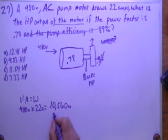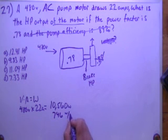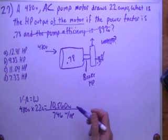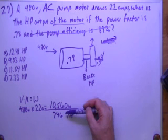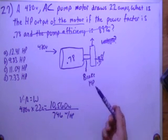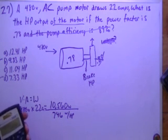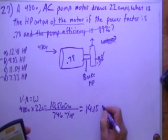We also know that there are 746 watts per horsepower from the formulas in the front of the book. And so if I divide 10,560 by 746, I should get something like 12-ish. It's probably not going to be 7, it's not going to be B or D. So I'll take 10,560 divided by 746, and I get 14.15 horsepower. And that's brake horsepower.